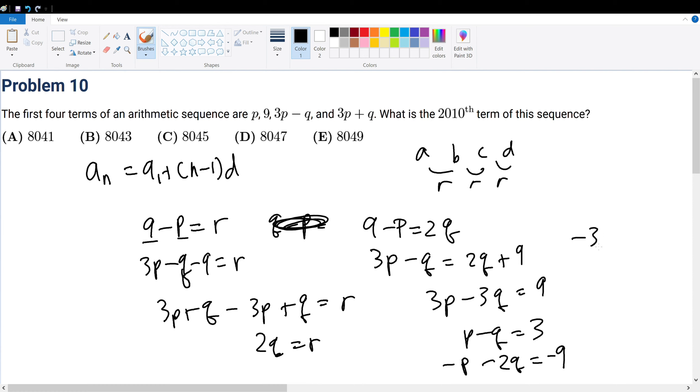Minus 2q is equal to negative 9. If we add them, negative 3q is equal to negative 6, so q is equal to 2.